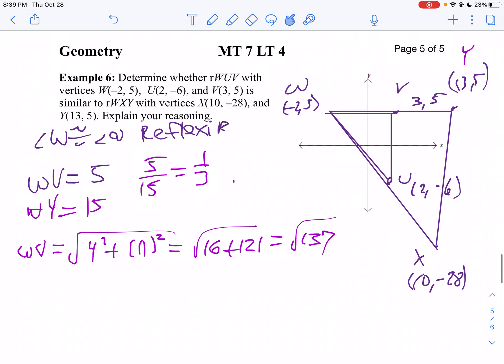Then let's take a look at the distance from W to X. So look at my X distances from 10 to negative 2. That's 12. And then from negative 28 to positive 5, well, that would be negative 33. Or 33. So that will be 144 plus 33 squared. I'm going to use my calculator for that because that's kind of a big number.